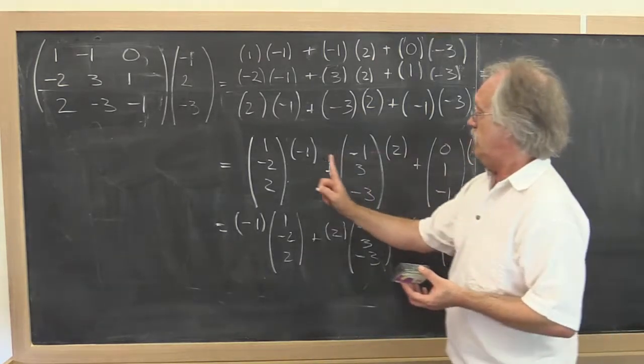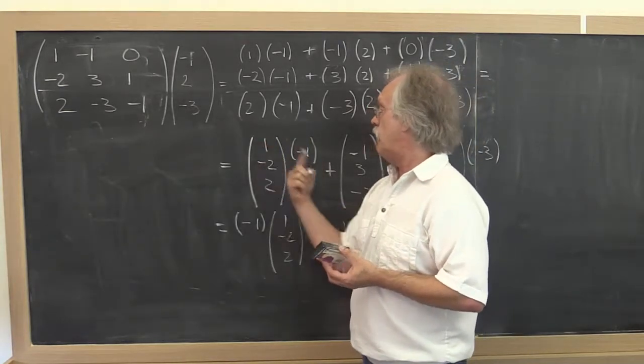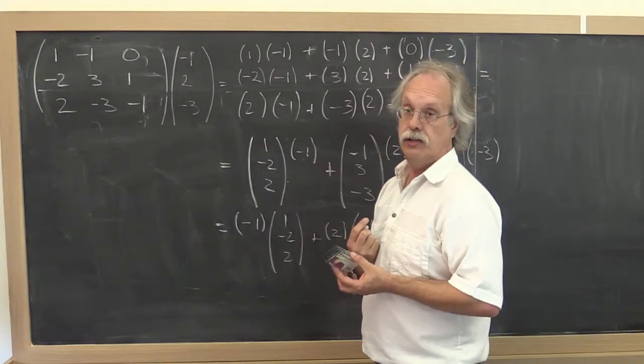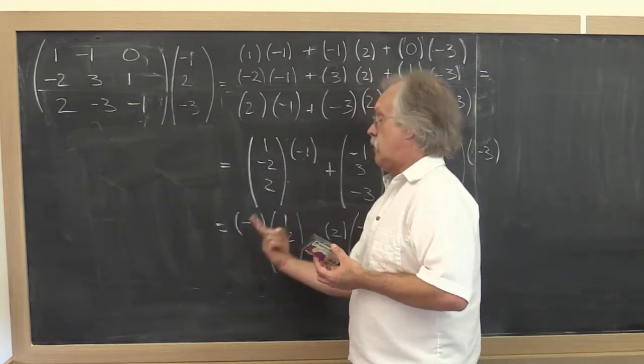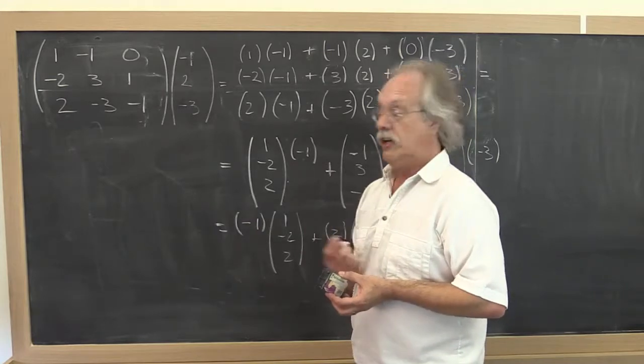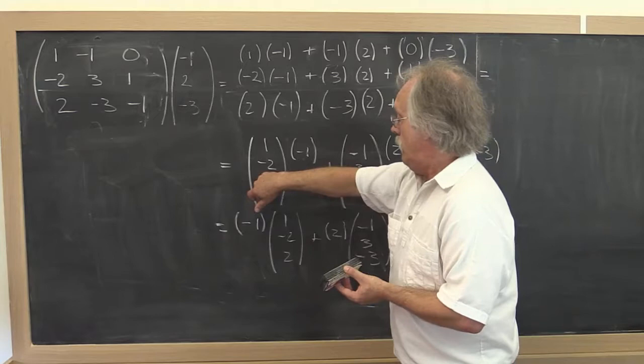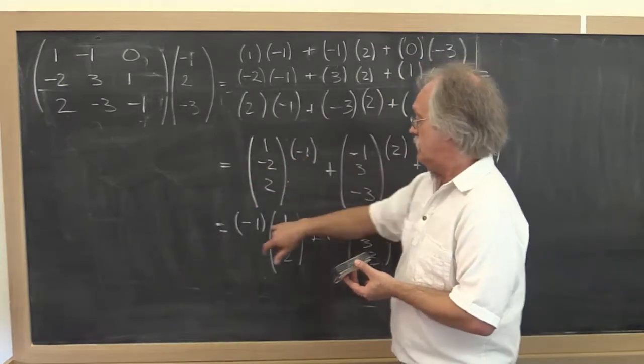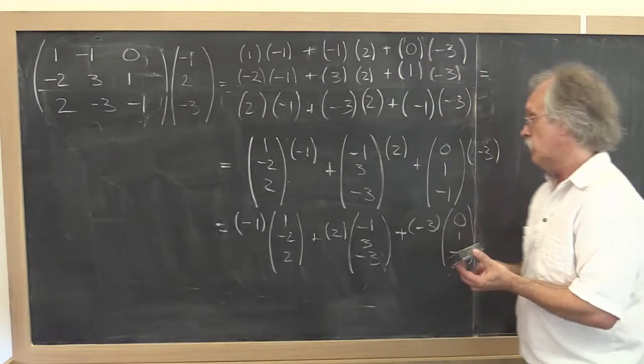And notice that this here you can think of as a matrix matrix multiply of a 3 by 1 matrix times a 1 by 1 matrix. But that is the same as saying scale that vector by the scalar minus 1. So whenever you do a vector times a scalar, that's the same as a scalar times a vector. And that's something you may have learned in linear algebra as well.